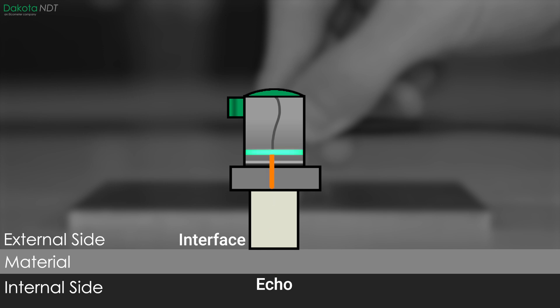By considering the time taken and the known speed of the pulse, the gauge disregards the delay line's length and accurately measures the material thickness.